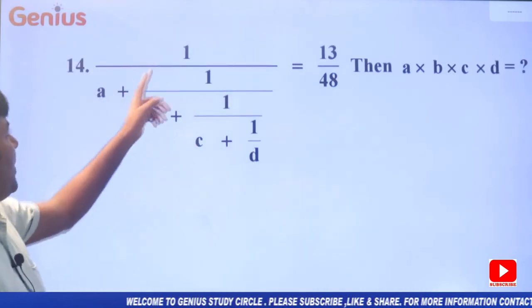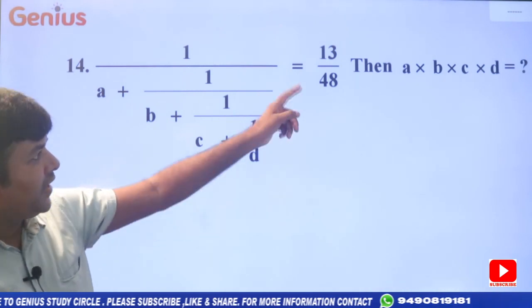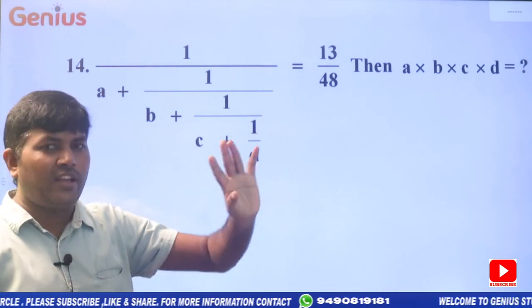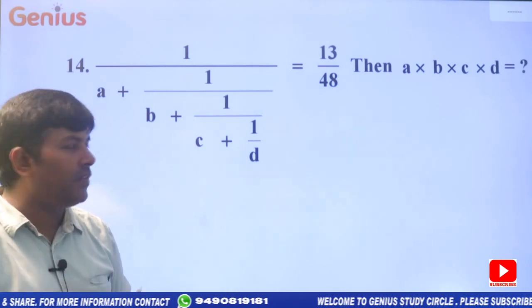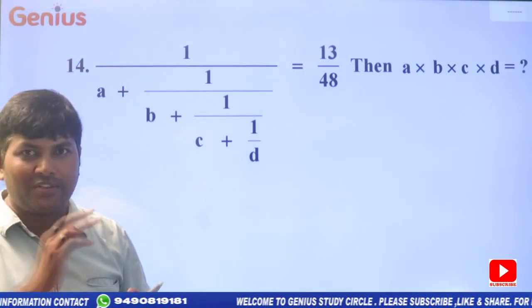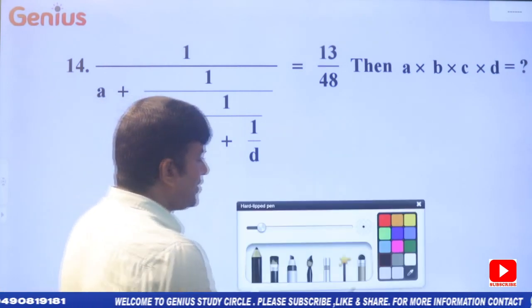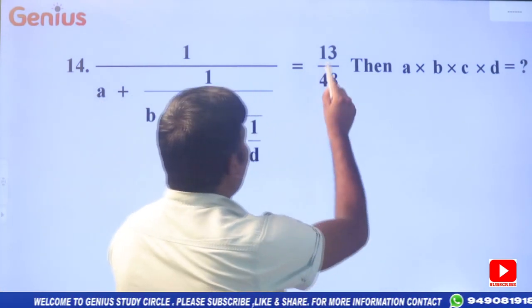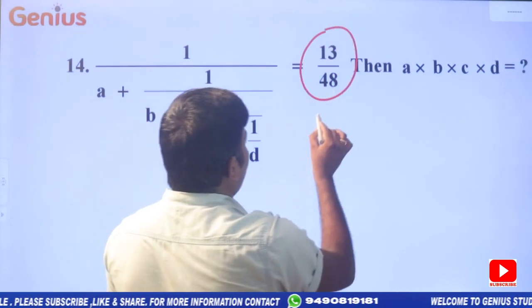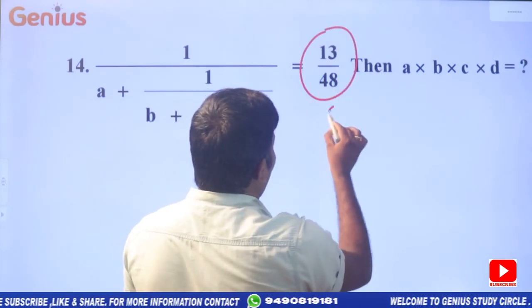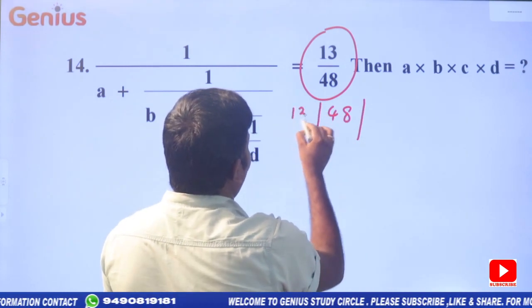Problem: 1/A + 1/B + 1/C + 1/D = 13/48. Find A×B×C×D. First concentrate on the ABCD values. Use HCF — divide 48 by 13.